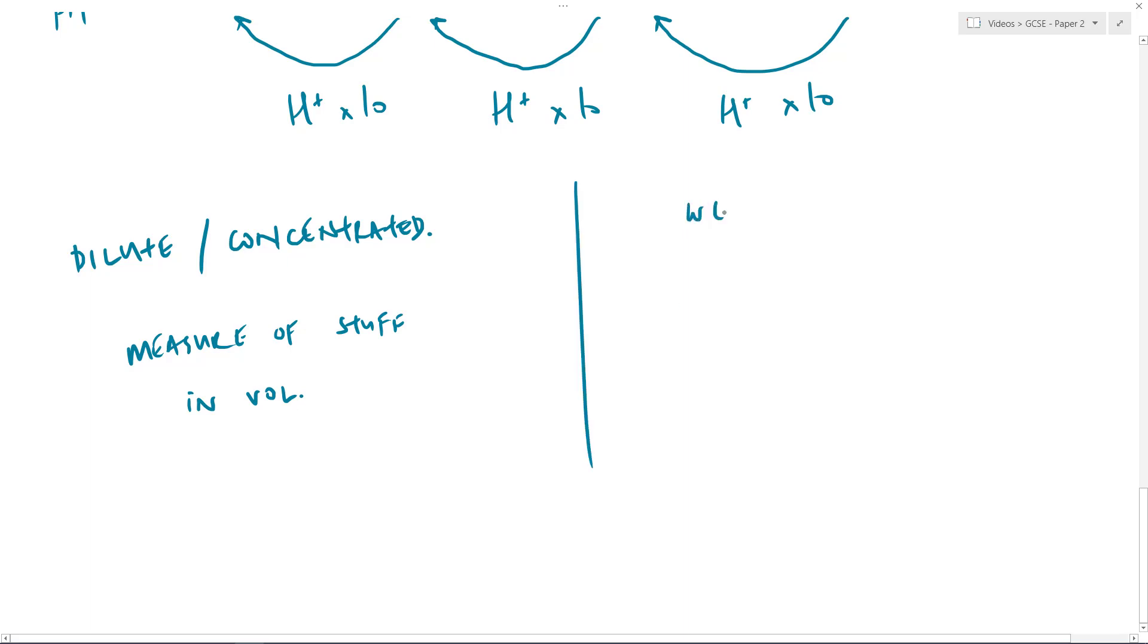Whereas the term weak and strong is specifically used to measure, as previously mentioned, the ionization or the splitting of the acid or the alkali. Weak means it's partially, not completely ionized. Strong means it is completely ionized. Those are important terms.